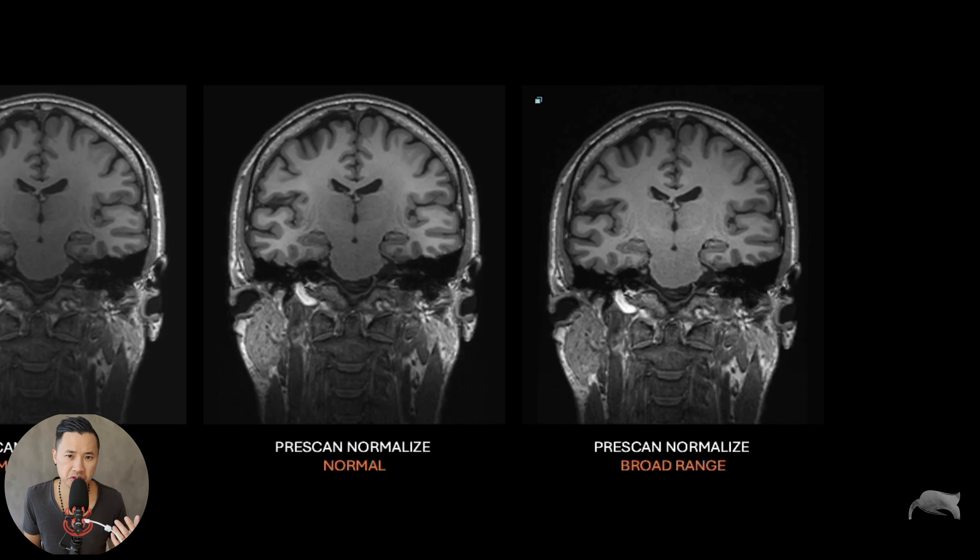That's it, guys. I hope you find this video valuable. Pre-scan normalize is a very important parameter — usually it's set on normal, however for spine imaging I really use broad range because the difference is significant. I was very surprised about the brain imaging today as well, because with broad range the middle part was much clearer and better. This is something I'm going to take a further look into. I have a question for you: whenever you're using pre-scan normalize, what options do you use for different organs? Let me know in the comments below. If you like this video, don't forget to push the like button, hit subscribe, and hit the notification bell. Until next time, take care and I'll see you around.